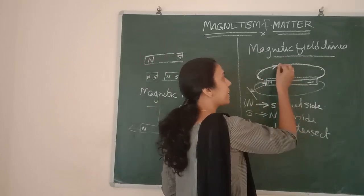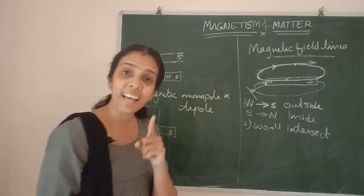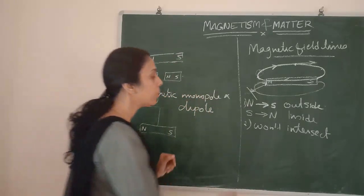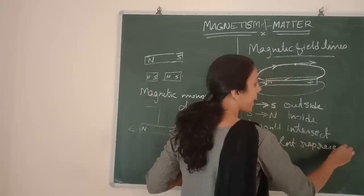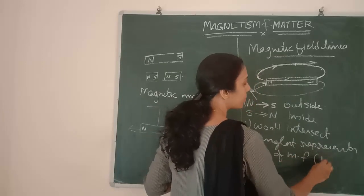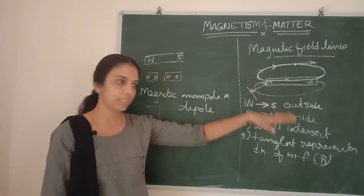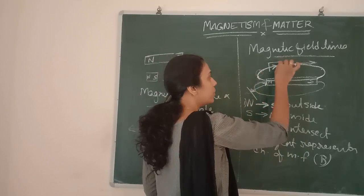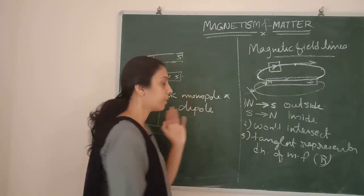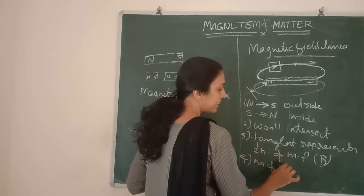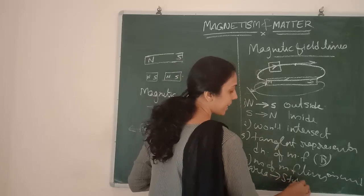The Magnetic Field Line — if I am drawing a tangent to a particular point, the direction of that tangent represents the direction of the Magnetic Field. And if I am drawing one unit area and counting the number of field lines, that number of Magnetic Field Lines in unit area represents the Strength of the Magnet.